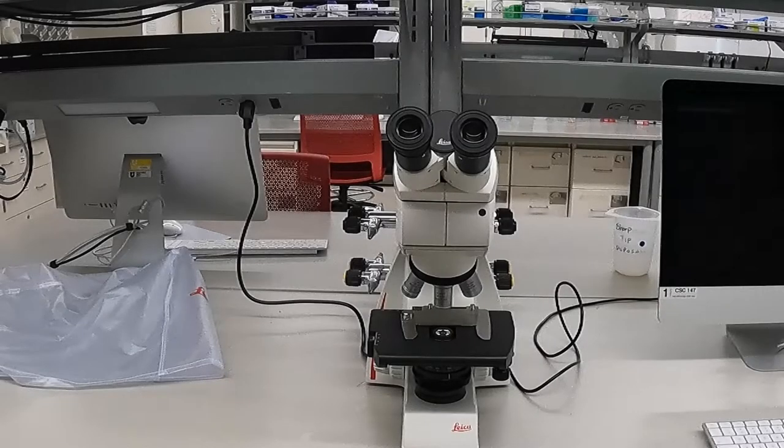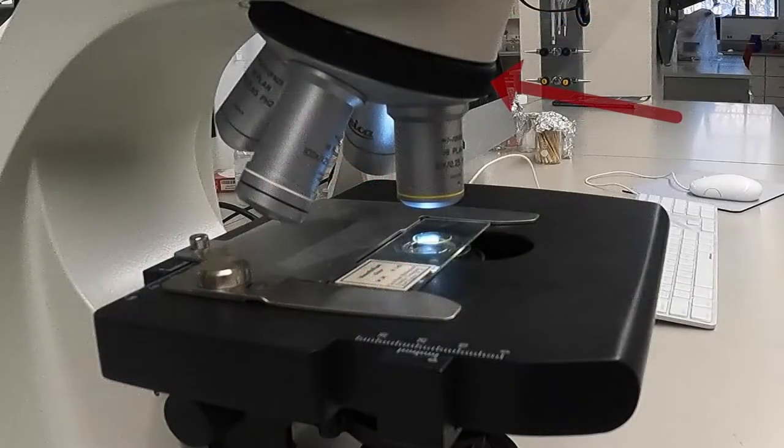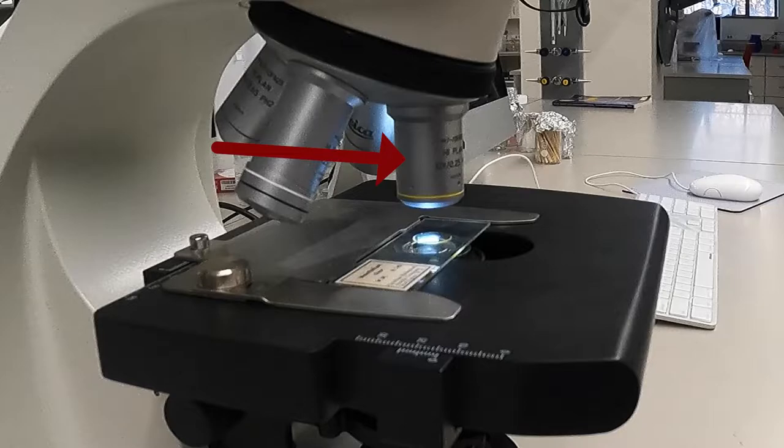Moving down from the ocular lens, we come to the revolving nose piece. The nose piece holds the objective lenses and each of these has a different magnification.